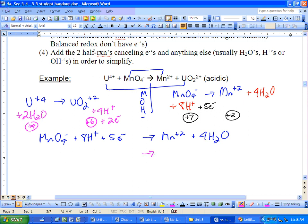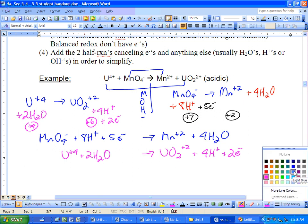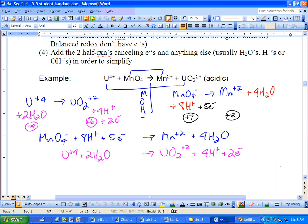So I'm going to write it nice and neat so my arrows match up. I have U+4 plus 2 H2O going to UO2+2. I have 4 H+ and 2 electrons. So I have done the major hydroxide half reaction method twice.